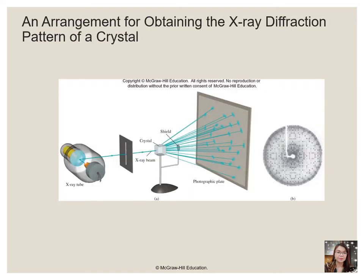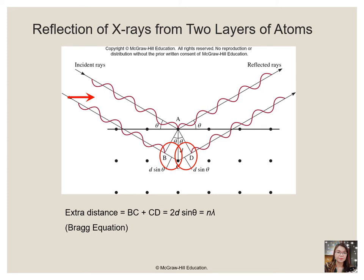Crystalline solids or crystals have distinctive internal structures that in turn lead to distinctive flat surfaces or faces. The faces intersect at angles that are characteristic of the substance when exposed to X-rays. Each structure also produces a distinctive pattern that can be used to identify the material. The characteristic angles do not depend on the size of the crystal; they reflect the regular repeating arrangement of the component atoms, molecules, or ions in space. Using the Bragg equation, 2d sin θ = nλ, we can calculate the distance between planes.